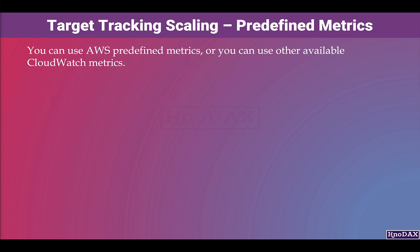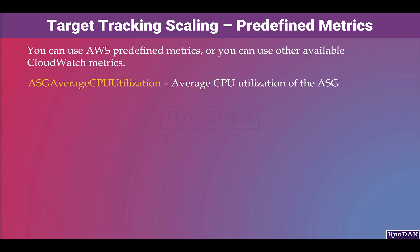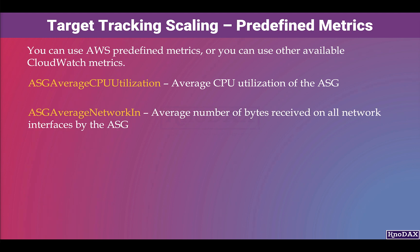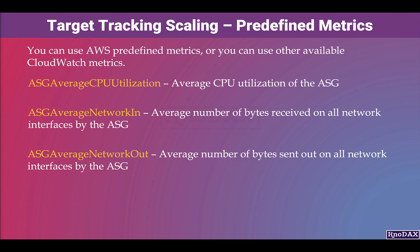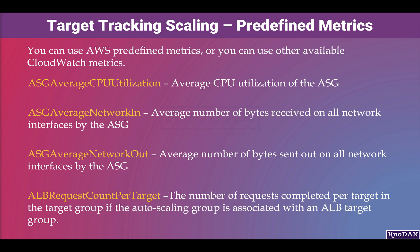You can use AWS predefined metrics or other available CloudWatch metrics. These are some predefined metrics: ASG average CPU utilization, which is the average CPU utilization of the auto scaling group; ASG average network in, which is the average number of bytes received on all network interfaces by the auto scaling group; ASG average network out, which is the average number of bytes sent out on all network interfaces; and ALB request count per target, which is the number of requests completed per target in the target group if the auto scaling group is associated with an ALB target group.